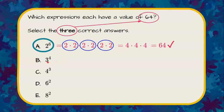Now let's look at B. The base is three, the exponent is four. That means take three and multiply it by itself four times. Let's make this simpler. Three times three is nine. So now I have nine times nine which is 81. That does not have a value of 64, so we're going to cross that off.